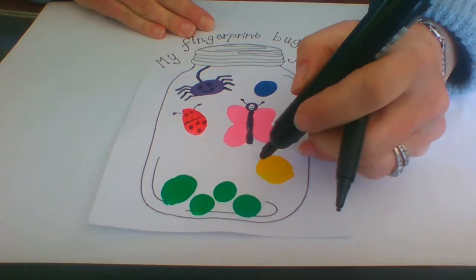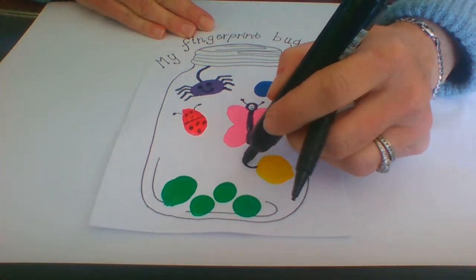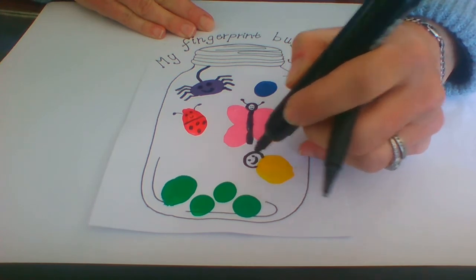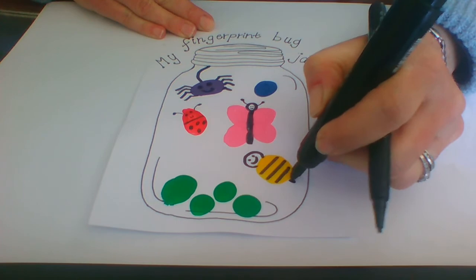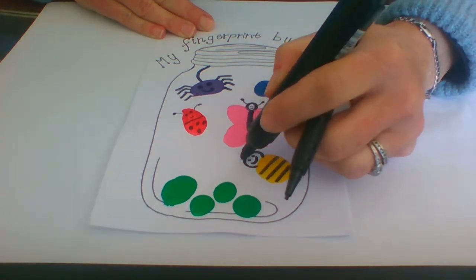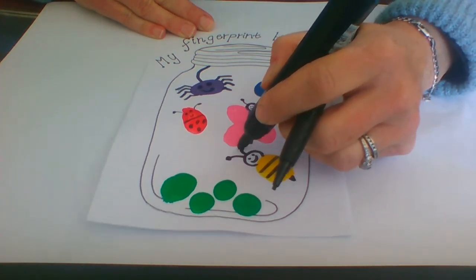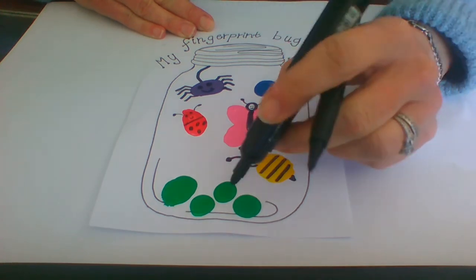Then the red one here, we can make it into a little bee. So we can draw a little head for him. And then remember the bee has little lines. And of course, he's got a little sting. And he's an insect. So he's got a little antenna.